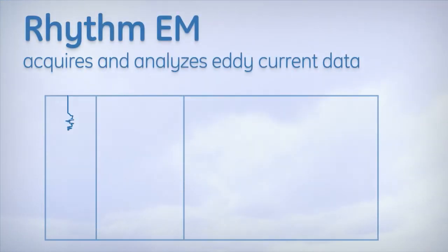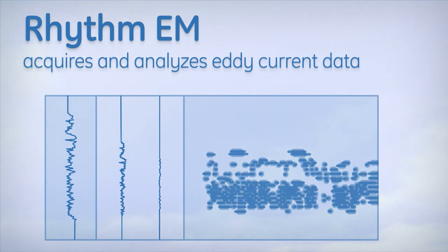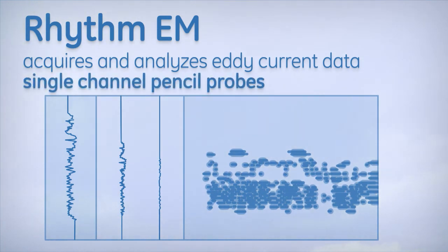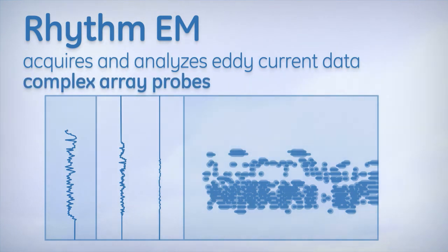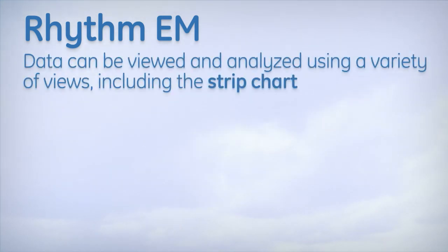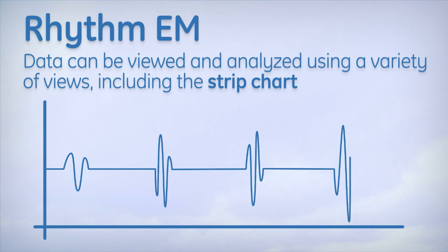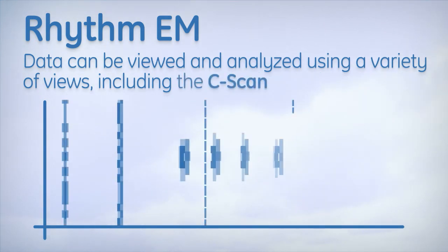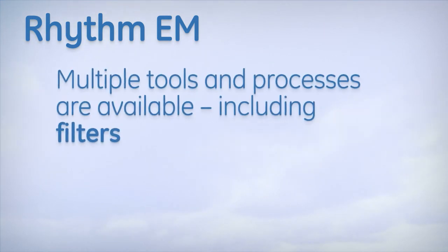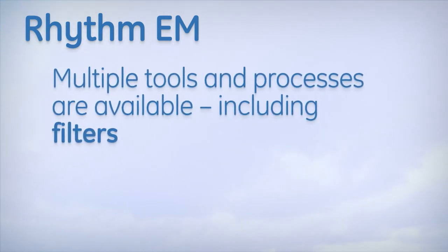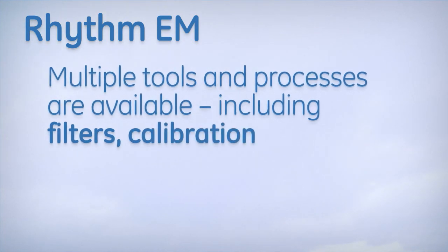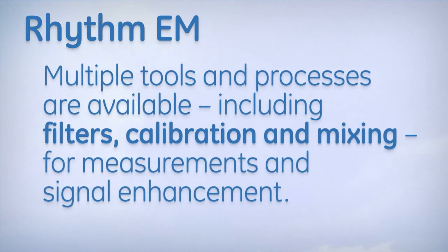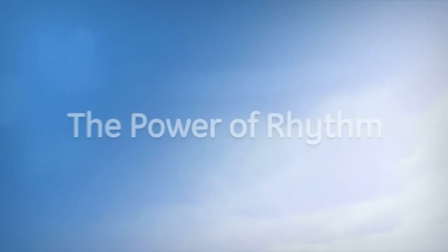Rhythm Electromagnetic acquires and analyzes eddy current data for everything from single-channel pencil probes to complex array probes. Data can be viewed and analyzed using a variety of views, including the strip chart, the IPG impedance plane graph, and C-scans. Multiple tools and processes are available, including filters, calibration and mixing, for measurements and signal enhancement.